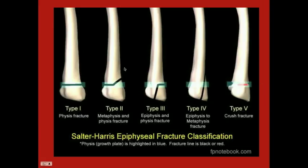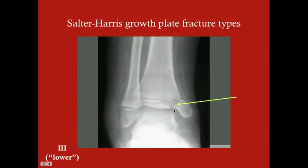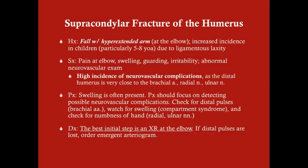Here's another way to look at it — an illustration I found online. The growth plate, the physis, is shown in light blue, and the fracture line is the darker blue. In the first example, the fracture comes in from above and then goes through the physis — that's type 2. In the second example, it comes up from below and then through the physis — that's type 3.